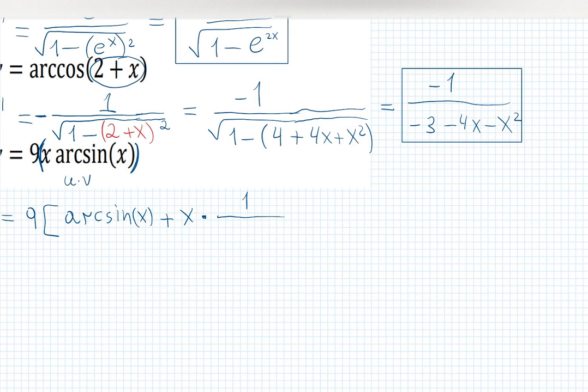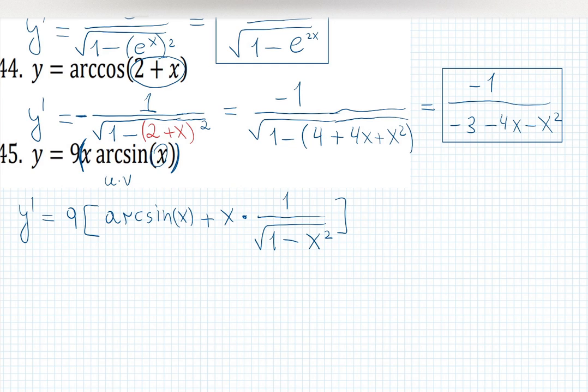I remember that arcsine is 1 over square root 1 minus input squared. Input is x, so it's just x². Derivative of the function inside is just derivative of x. Derivative of x is 1. So this is the answer.